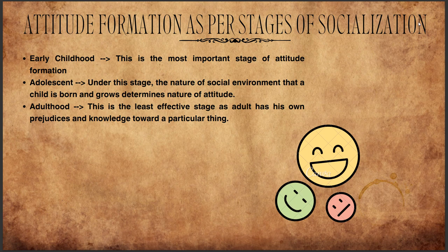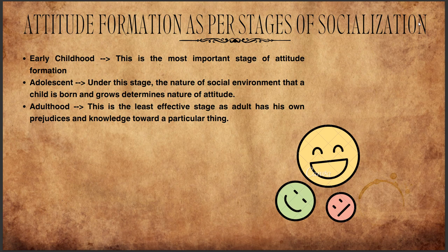Next is attitude formation as per the stages of socialization. Early childhood is the most important stage because a child's mind is clean — they do whatever they observe, like learning the mother tongue. In the adolescent stage, the nature of the social environment in which a child is born and grows determines the nature of their attitude. It can be positive or negative — that is why stereotyping, prejudice, casteism, and discrimination are passed on from generation to generation.